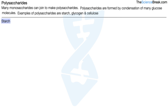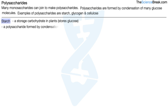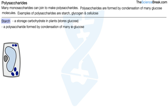Let's start off with starch. This is a storage carbohydrate in plants. It stores glucose which can be used for respiration. It's a polysaccharide formed by condensation of many alpha glucose monomers. We can find starch in plant cells — you can see some dark colored starch grains where you might find them in a plant cell.